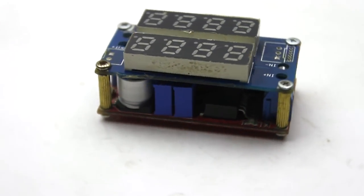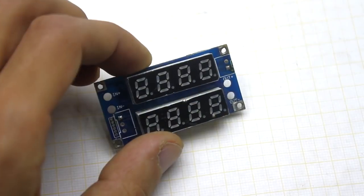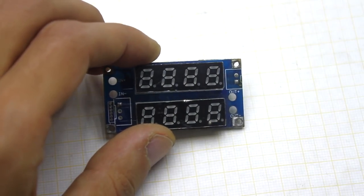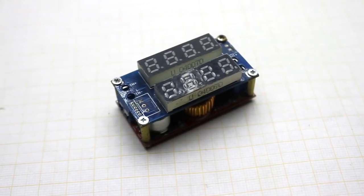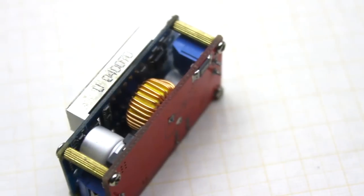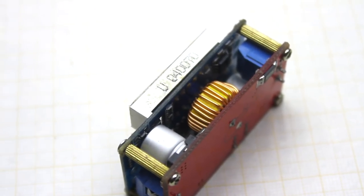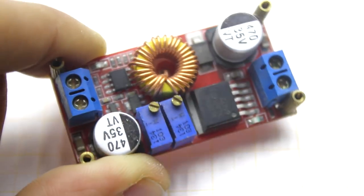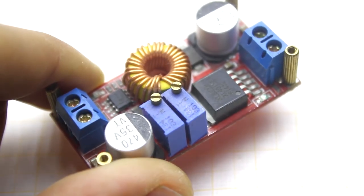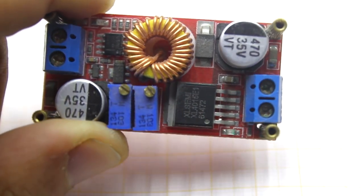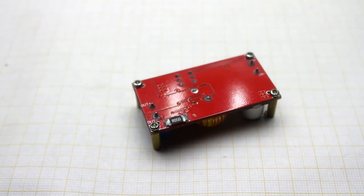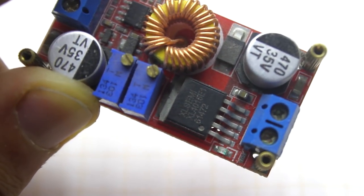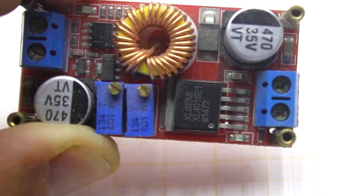As a stabilizer, I chose a ready-made Chinese model with a built-in volt ammeter. To say correctly, it's a step-down impulse stabilizer with a voltage and current adjustment. The voltage adjustment range starting around 0 and up to 30V, and the current is from 0 to 5A, although at maximum current such a model will not work for long without additional cooling of the chip XL4015, on basis of which it is built.